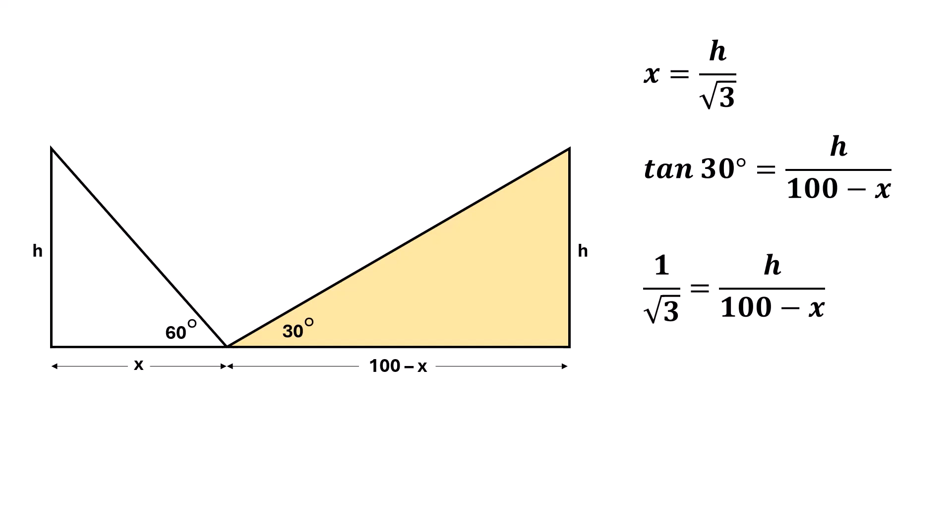Now, by cross-multiplication, we get square root of 3 times h equals 100 minus x.